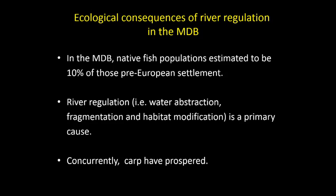River regulation disadvantages native fish and advantages invasive or exotic species. In the Murray-Darling Basin, native fish populations are estimated to be about 10% of their pre-European levels, and the primary cause of this decline is river regulation — dams, weirs, water extraction, habitat modification, and habitat fragmentation. At the same time that native fish have declined, invasive species like common carp have prospered.